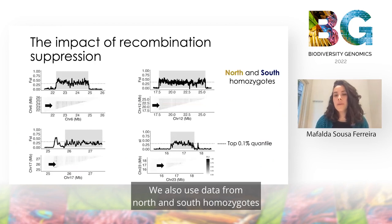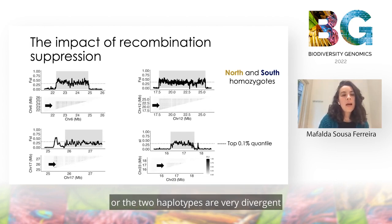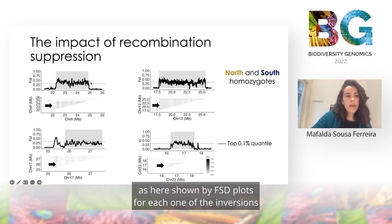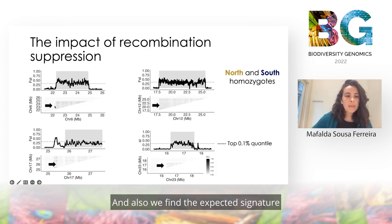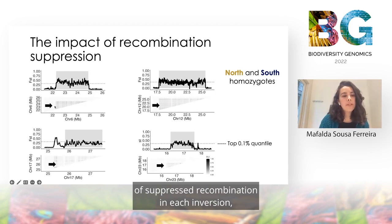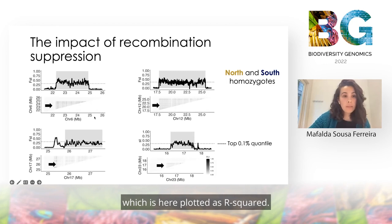We also used data from North and South homozygotes to show that these inversions, or the two haplotypes, are very divergent, as shown by FST plots for each one of the inversions, highlighted in gray. We also find the expected signature of suppressed recombination in each inversion, plotted here as R-squared.